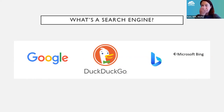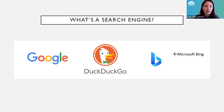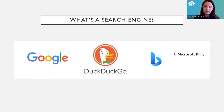Here are some popular search engines. Google is so popular it's a verb — just Google it. Google has more than a 91% market share, and everybody else is fighting for that extra 9%. The reason for that is that Google has gotten pretty good. Some other ones to call out are DuckDuckGo, which is a favorite of privacy advocates, and Microsoft Bing.